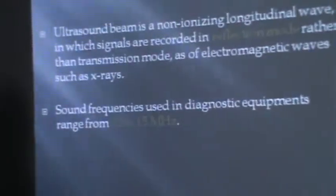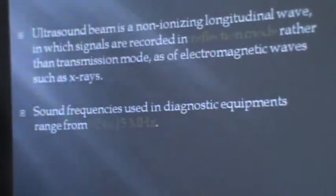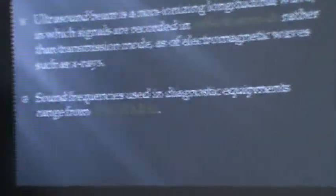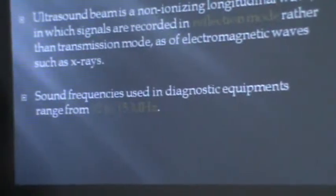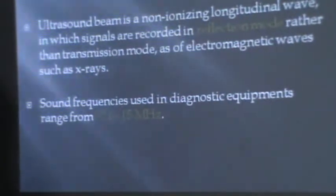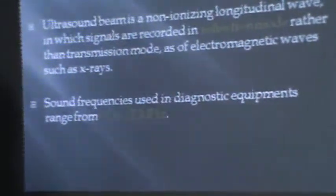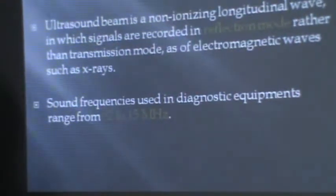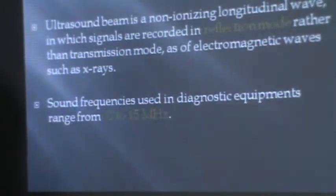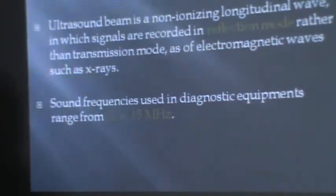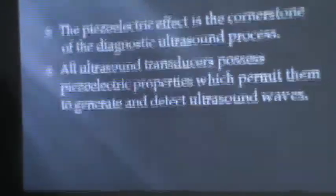Sound frequencies in diagnostic equipment range between 2 megahertz to 15 megahertz. Normally, all waves with frequency more than 20,000 Hertz are labeled as ultrasound waves, but in our instruments the high-frequency sound waves used have frequencies between 2 megahertz to 15 megahertz. Mega means million cycles per second, so the equipment we use has frequency between 2 to 15 megahertz.